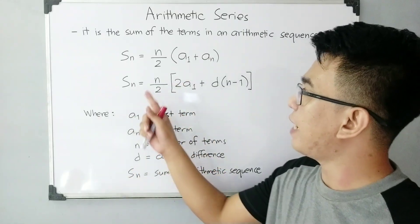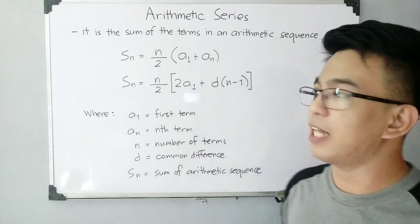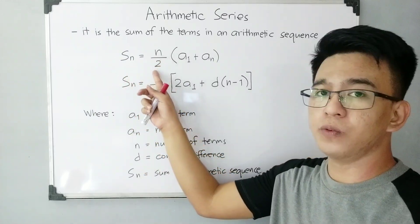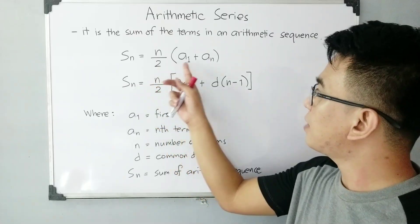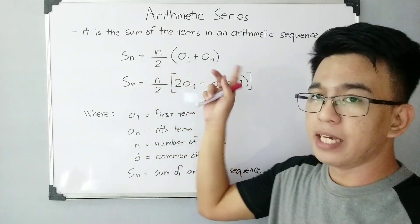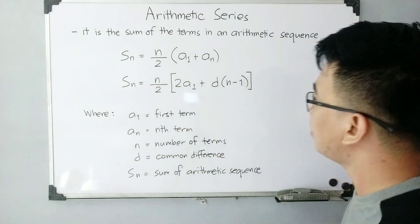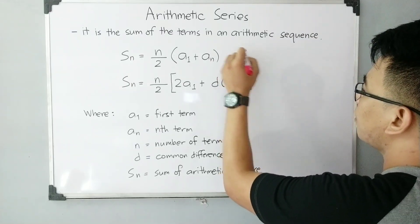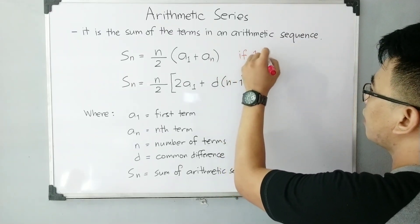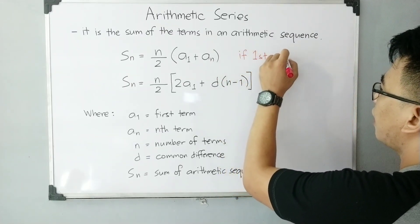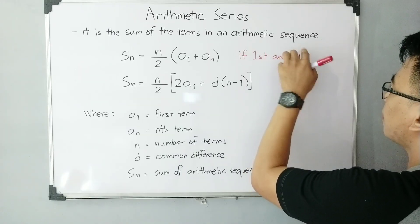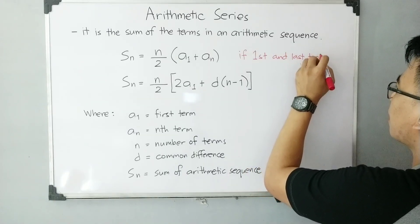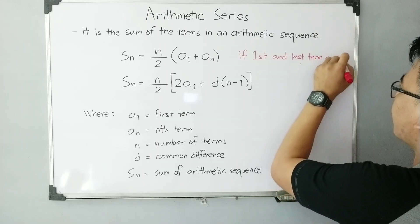For the calculation of arithmetic series, we have two different formulas. We have S sub n is equal to n over 2 times (a sub 1 plus a sub n). This formula can be used if the first and last term are given.